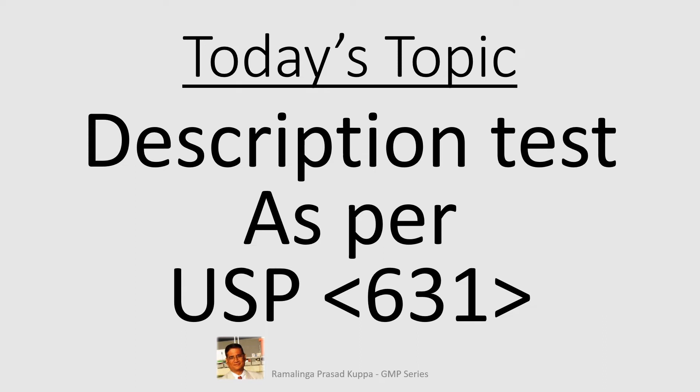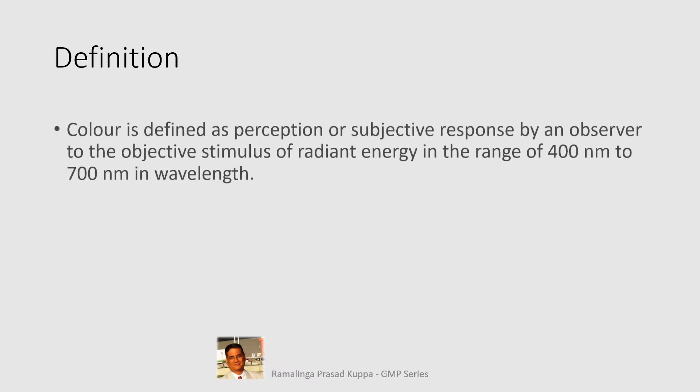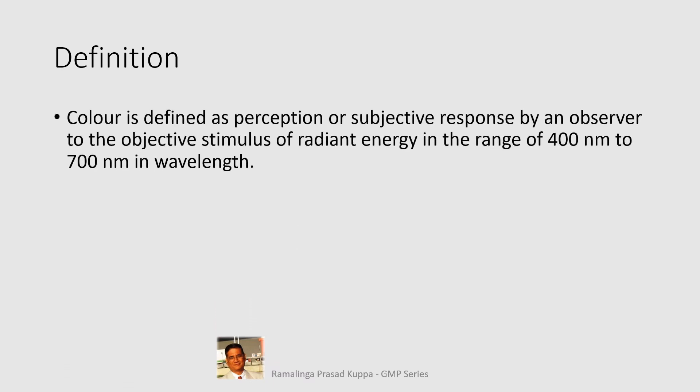It is also important to understand the intent of USP Chapter 631. Let us see in the following slides. Color is defined as the perception or subjective response by an observer to the objective stimulus of radiant energy in the range of 400 nanometers to 700 nanometers in wavelength.